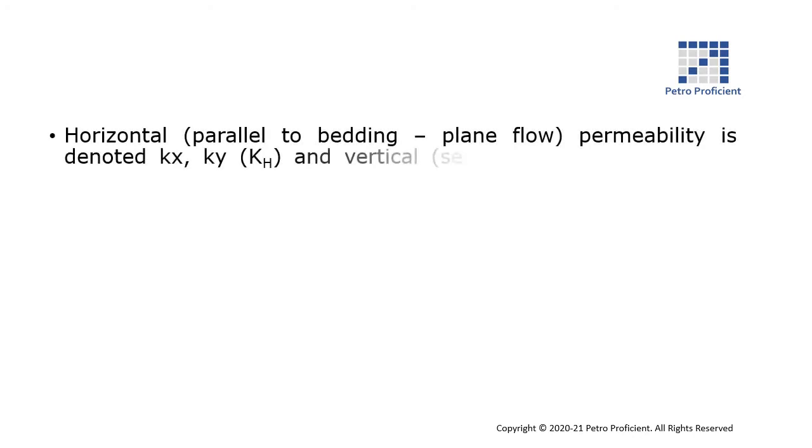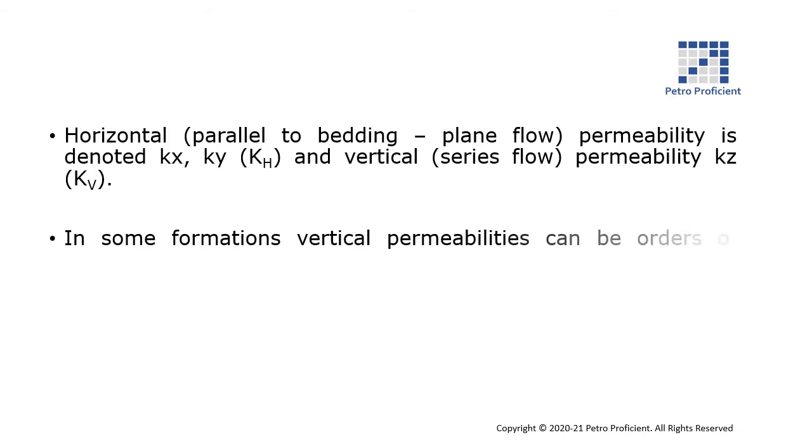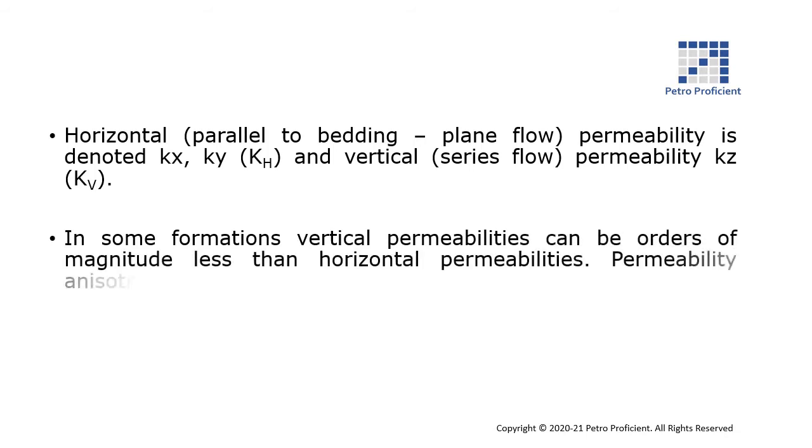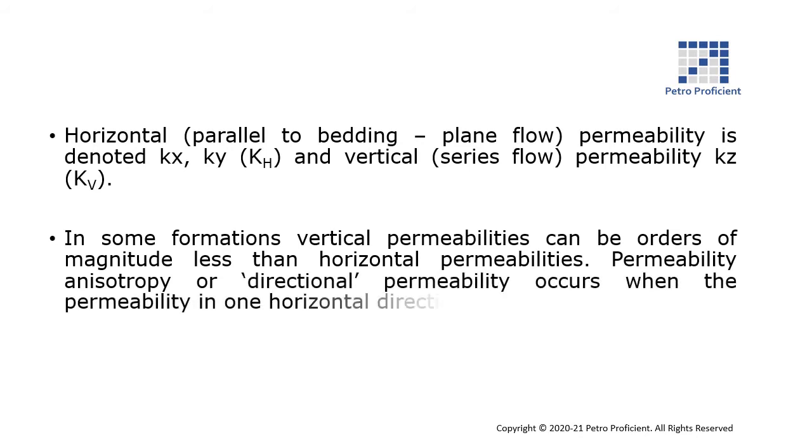For one-dimensional linear flow, horizontal permeability is denoted as KX or KY or KH, and vertical permeability is KZ or KV. In some formations, vertical permeabilities can be orders of magnitude less than horizontal permeabilities. Permeability anisotropy or directional permeability occurs when the permeability in one horizontal direction dominates.